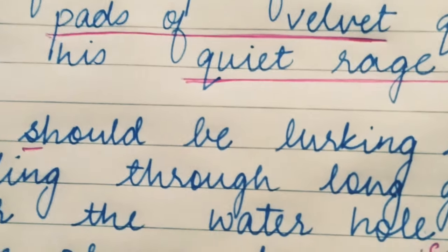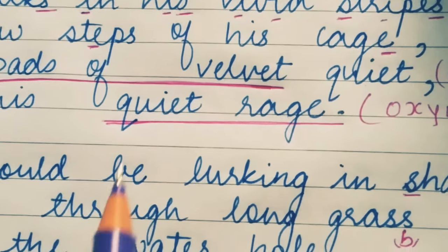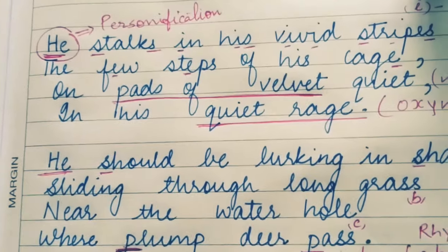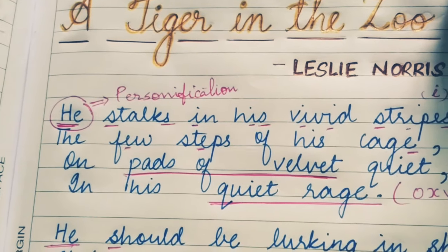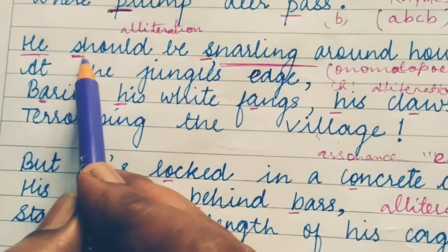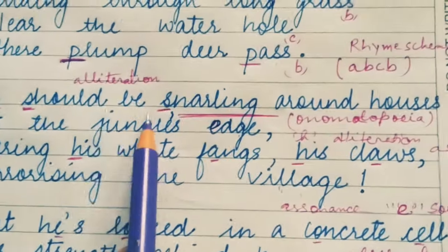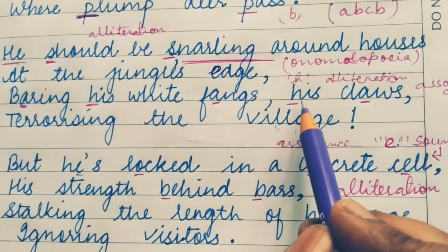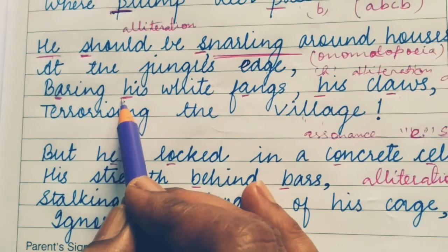I have explained all the important poetic devices. You can also find alliteration — the repetition of the initial sound. For example, 'He should be snarling' — the S sound is repeated at the beginning of words. Also, 'baring his white fangs, his claws' — here the H sound in 'his' is repeated. So these are examples of alliteration in this poem.